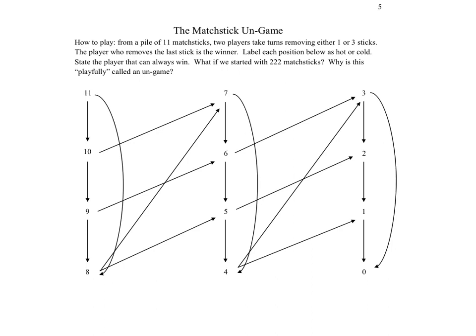Let's start by labeling hot and cold positions, again working from the end of the diagram. If you're at zero, the game is over and you've lost. Working backwards along those arrows: one is hot and three is hot. For position two, every way of possibly playing from it is hot — there's only one way to play from two but it plays into a hot position. So every way of playing is hot, making two cold.